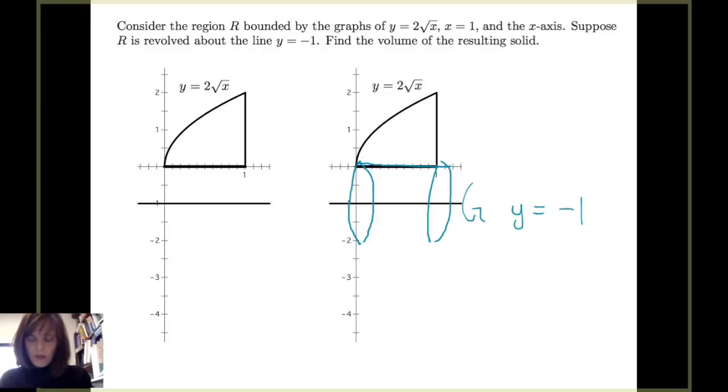That's going to be the hole of the solid. And then as I consider different points along the curve y equals 2 times the square root of x, I see that as I get closer to x equals 1, I'm going to get a solid that looks like that.